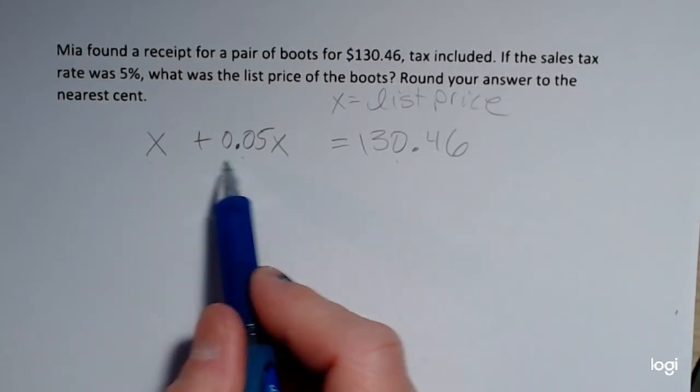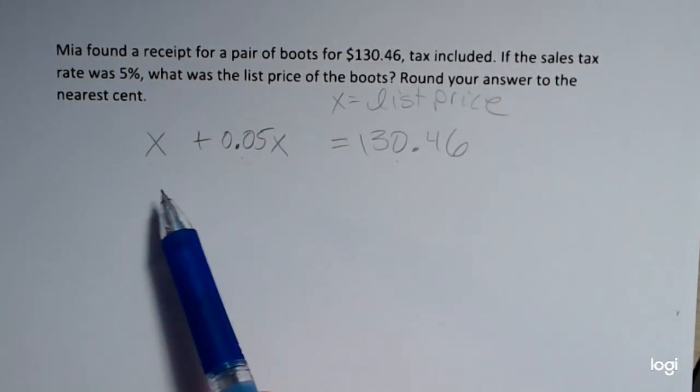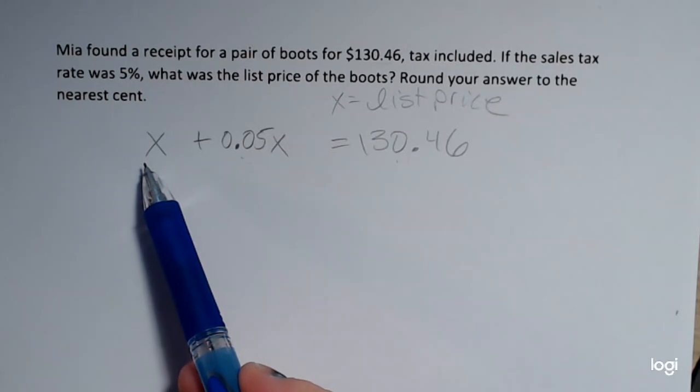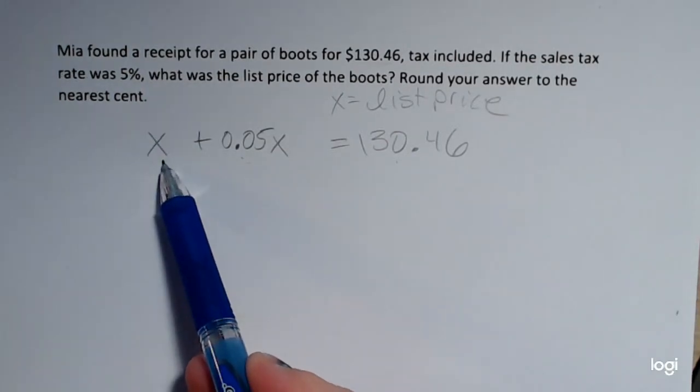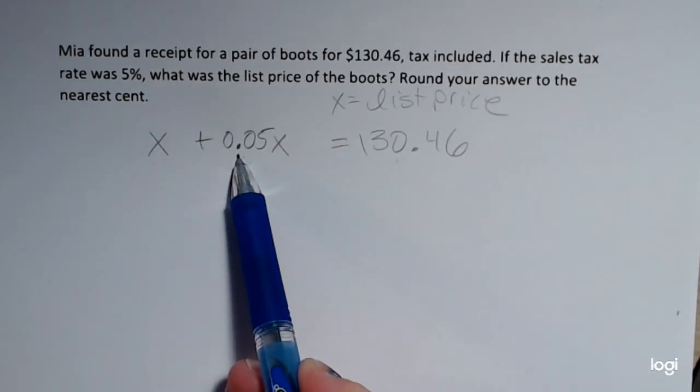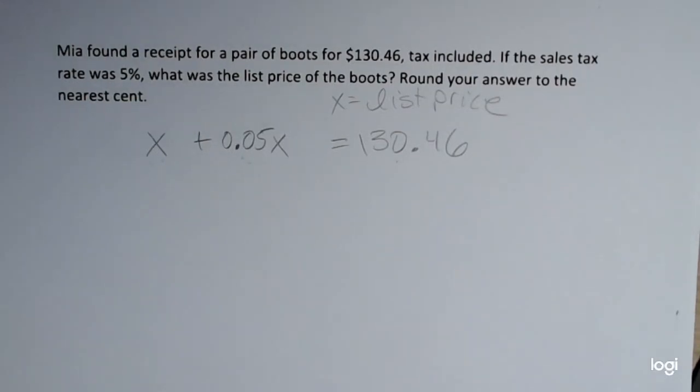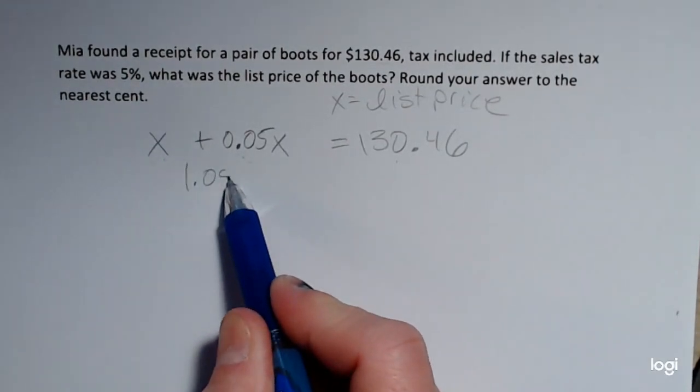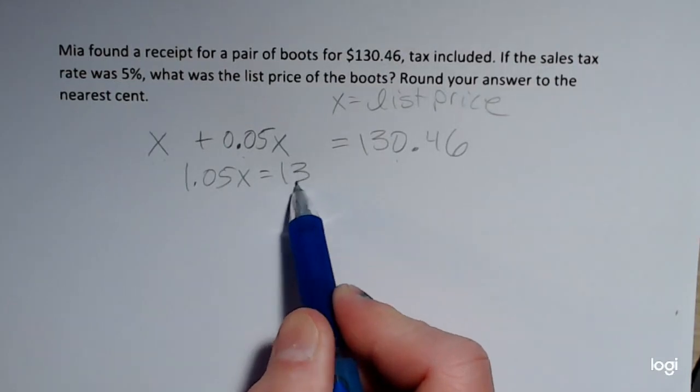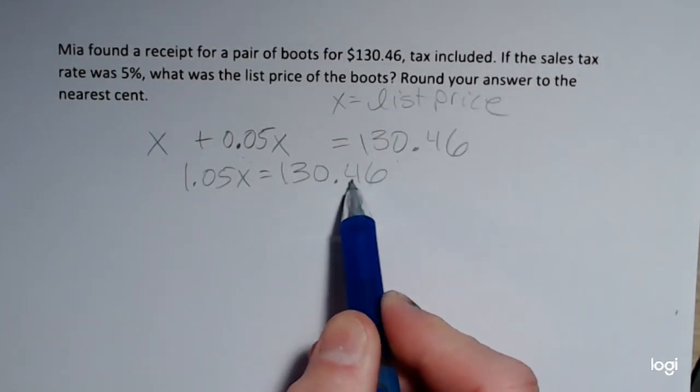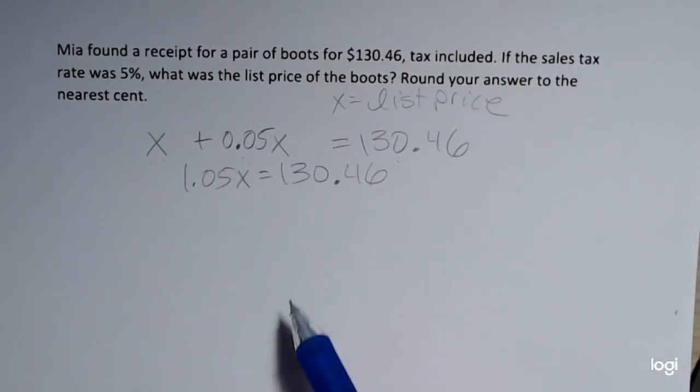Now here I can combine like terms. You can think of this as having a 1 in front of the x. This is 1x and I want to add 0.05 more. So this simplifies to 1.05x and I still have $130.46 on the right.